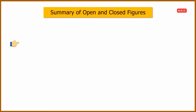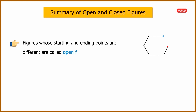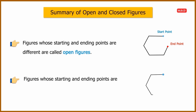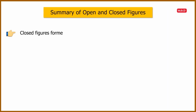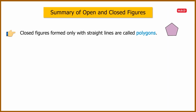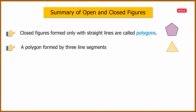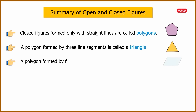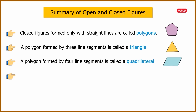Let us now summarize the different shapes we have learned. Figures whose starting and ending points are different are called open figures. Figures whose starting and ending points are the same are called closed figures. Closed figures formed only with straight lines are called polygons. A polygon formed by three line segments is called a triangle, and a polygon formed by four line segments is called a quadrilateral.